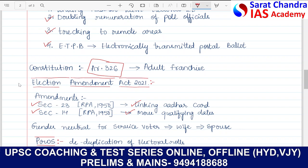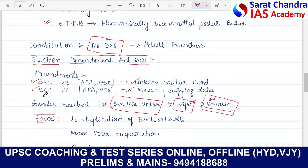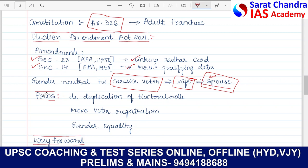There is also gender neutrality for service voting. Previously, if a person was working in the armed forces, his wife used to vote instead of him through service voting. Now the word 'wife' has been replaced with 'spouse' to address the question of female workers in service — so a husband can now vote in the name of his service-member wife, just as a wife could vote for her husband. This ensures gender neutrality.